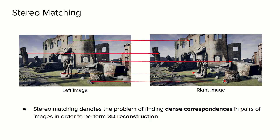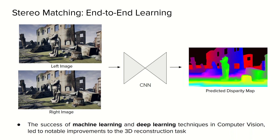In this talk we are going to focus on the stereo matching problem, a long-standing and active research topic in computer vision. The main goal of stereo matching is to recover dense correspondences between image pairs by estimating the disparity between matching pixels, required to infer depth through triangulation. Nowadays, deep learning architectures based on convolutional neural networks have outperformed traditional methods by a large margin in terms of accuracy on standard benchmarks.